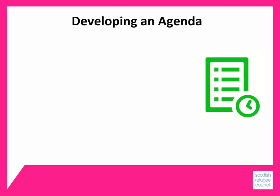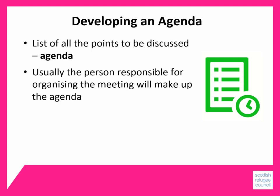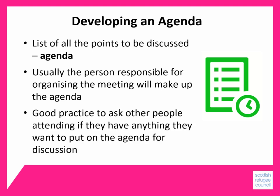The list of points to be discussed at a meeting is called an agenda. Usually the person responsible for organising the meeting will make up the agenda, but it's good practice to ask other people attending if they have anything they want to put on the agenda for discussion.